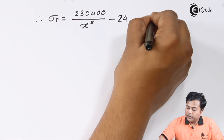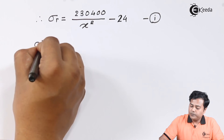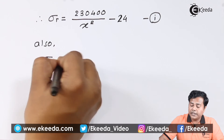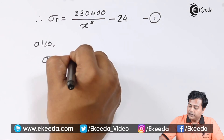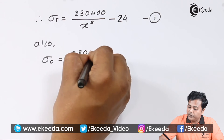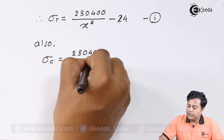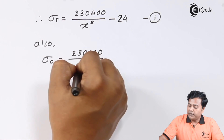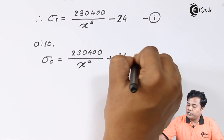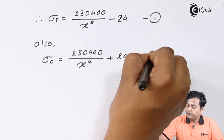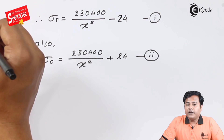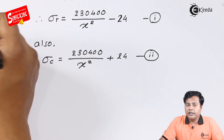The circumferential stress Sigma C is given by 230,400 divided by X square plus 24 — expression number two. With this we are going to solve for the mean radius.